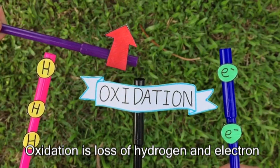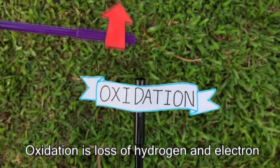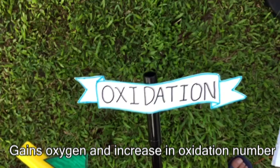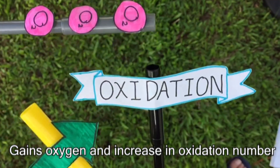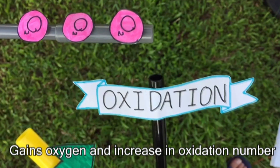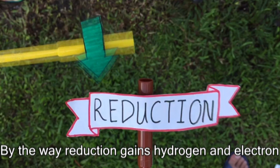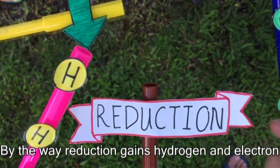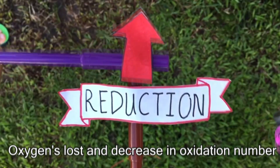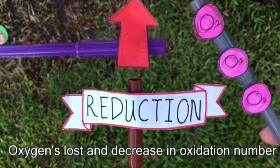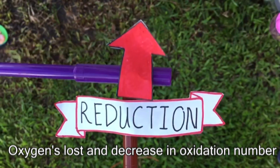Oxidation is loss of hydrogen and electrons, gains oxygen, and an increase in oxidation number. Reduction gains hydrogen and electrons, with oxygen's loss and a decrease in oxidation number.